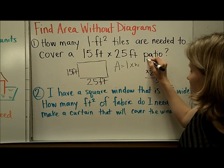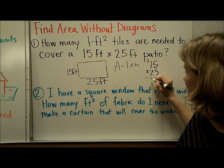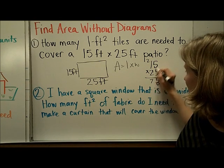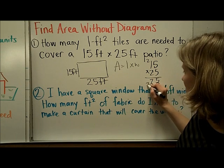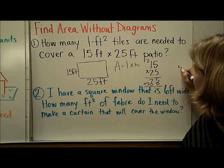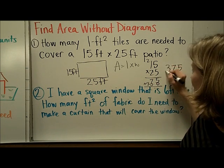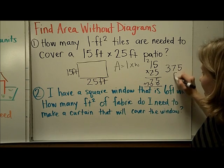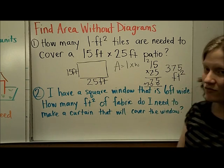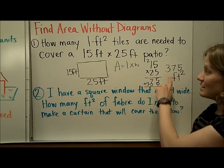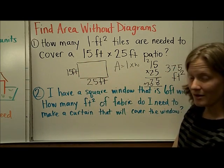5 times 5 is 25, carry the 2. 5 times 1 is 5, plus 2 is 7. 2 times 15 is 30, and then if I add them together my total is going to be 375 square feet. So it would take me 375 tiles to cover this patio.